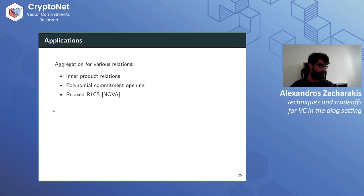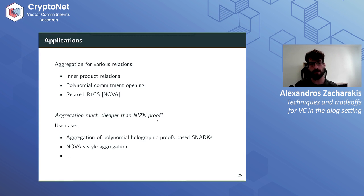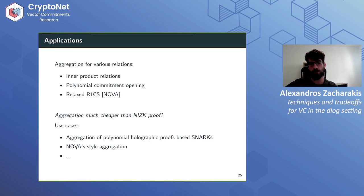This technique is not restricted to vector commitments — you can use it for much more general things. You can aggregate inner products, polynomial commitment openings, the relaxed rank-one constraint system construction of Nova, and even aggregate many SNARKs that consider different languages. Nova is concretely very efficient but every statement must be for the same language, whereas here you can aggregate SNARKs for different languages. The whole point is that this is much faster than producing full proofs.